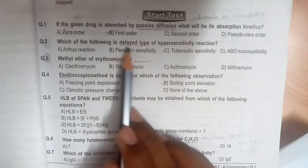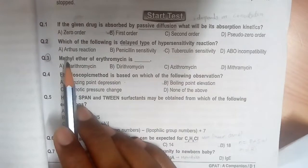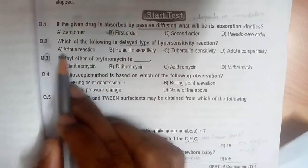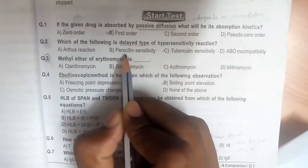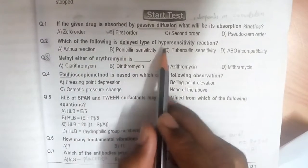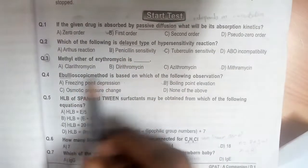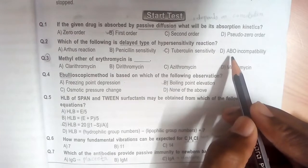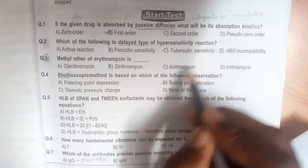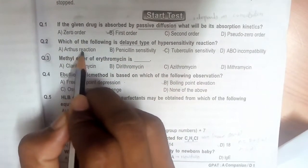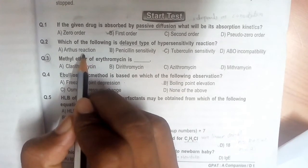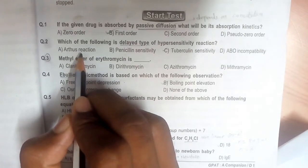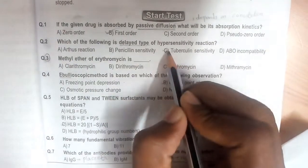Second question: Which of the following is delayed type of hypersensitivity reaction? These four are sensitivity reactions only. Penicillin sensitivity is type 1 hypersensitive reaction where the hypersensitivity is very fast, so this is not the correct answer. ABO incompatibility is type 2 and is a cytotoxic reaction, also not delayed. Arthus reaction forms antigen-antibody complexes during vaccine injections—it's a rare condition. The ultimate one is tuberculosis sensitivity, which is the right answer. It's a delayed type of hypersensitive reaction.